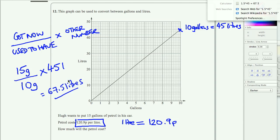So you can say the same thing. What have you got now? Divide what you used to have times the other number. How many litres have we got now? We've got 67.5. Okay, so 67.5.